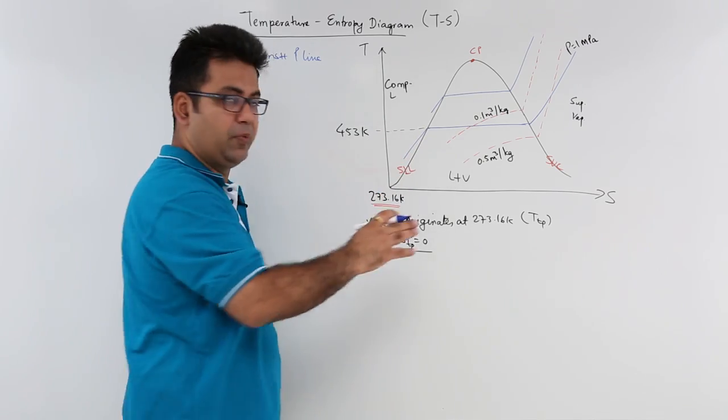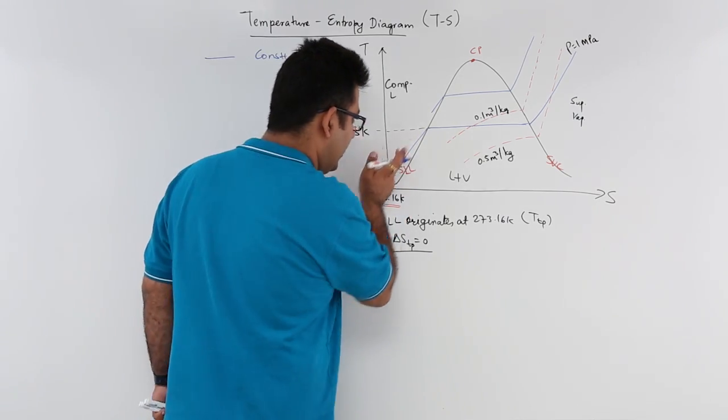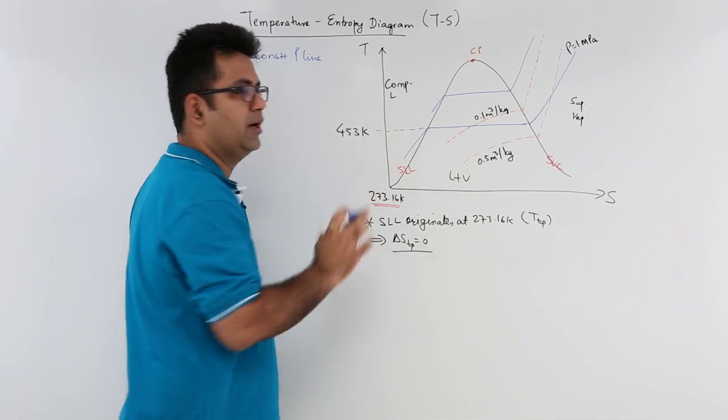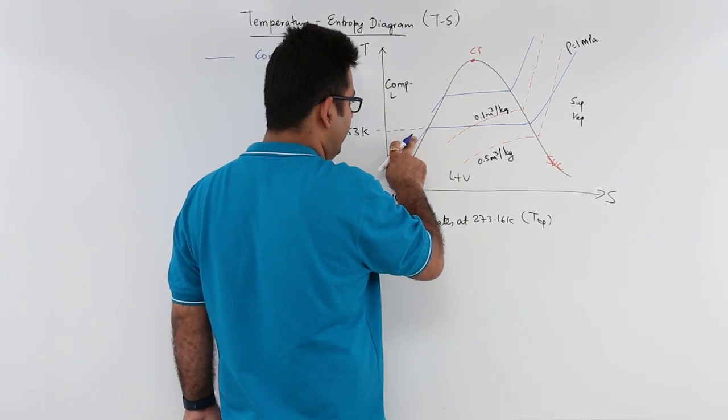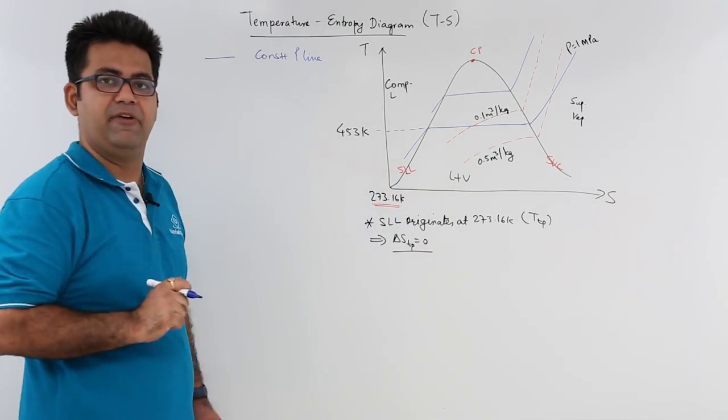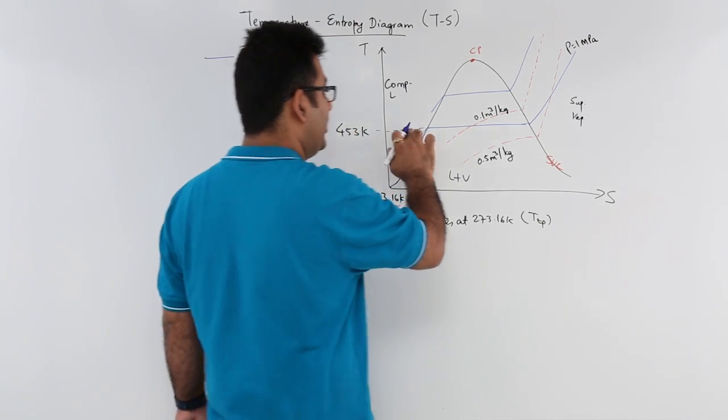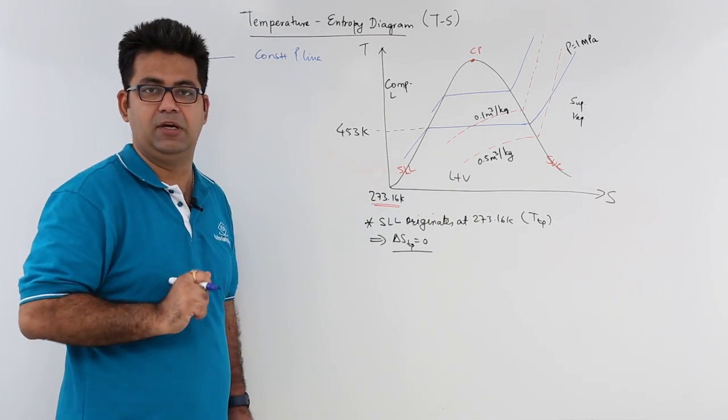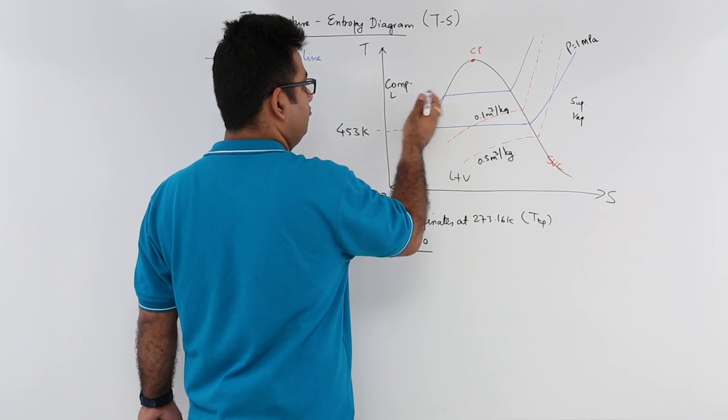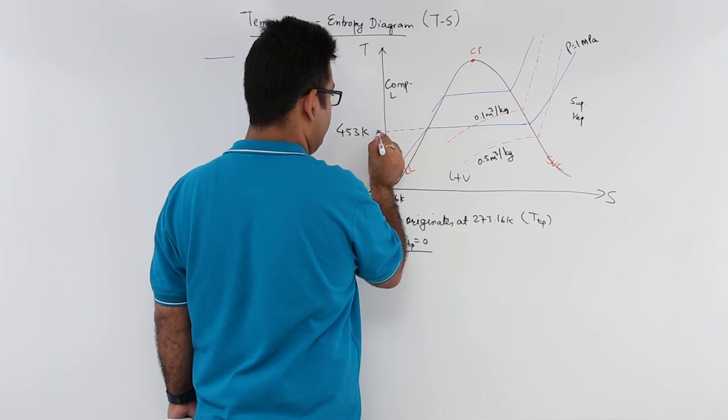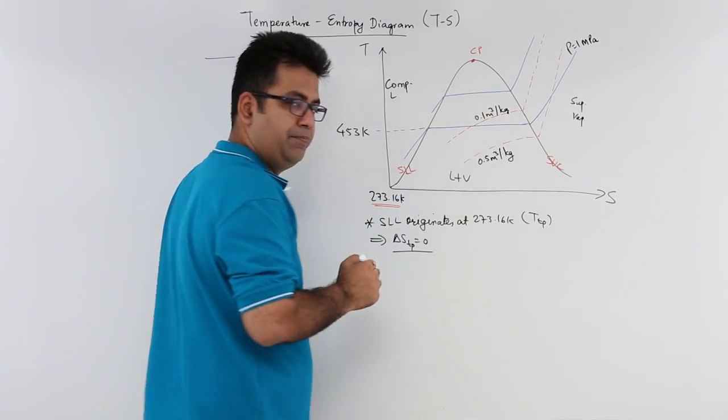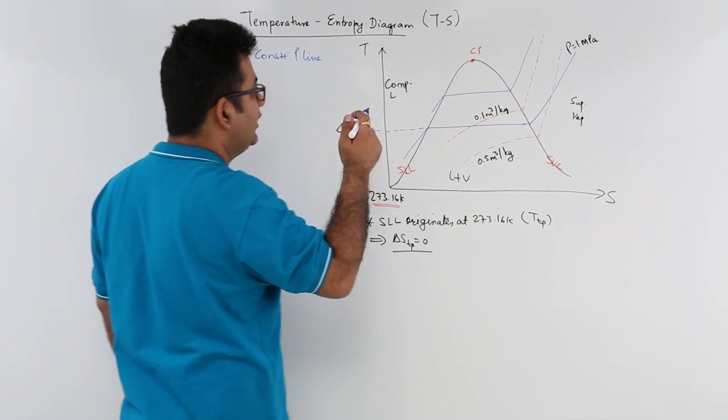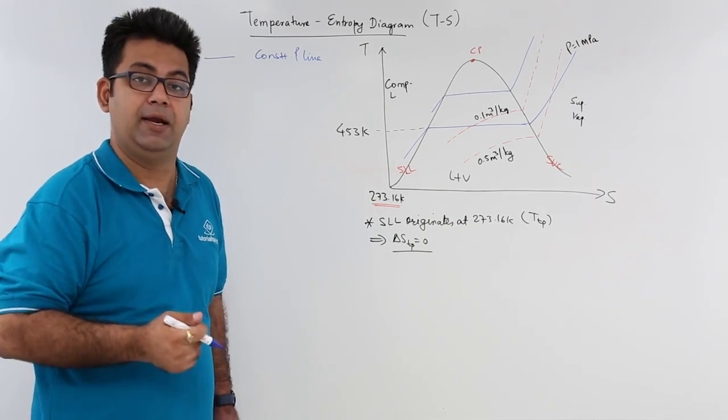Now in the compressed liquid region, the constant pressure line almost coincides with the saturated liquid line. When this constant pressure line comes into the liquid plus vapor wet region, it becomes parallel to the isotherm, that is the constant temperature line. In the liquid plus vapor region, the constant temperature line and the constant pressure line become parallel to each other.